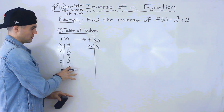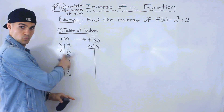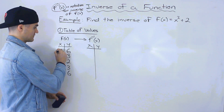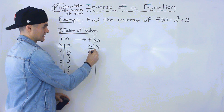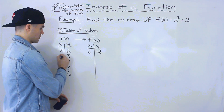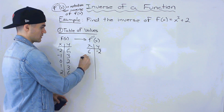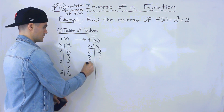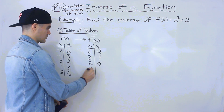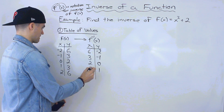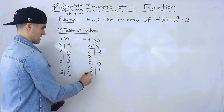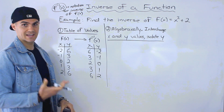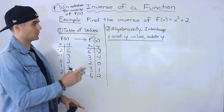The table of values for the inverse is just all of the x and y values for the function interchanged. So instead of negative two and six, we have six and negative two. Instead of negative one and three, we have three and negative one. Then two and zero, three and one, and six and two.